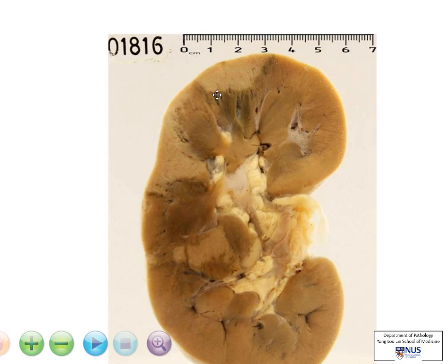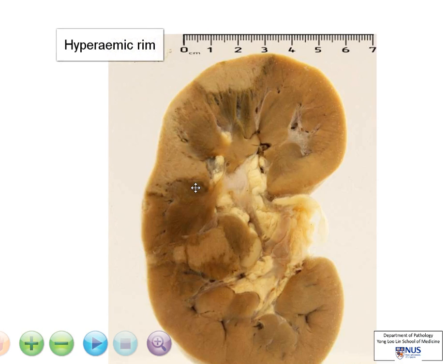Now at the edges of these pale areas, we can see some darker areas, almost like a darker rim around them, and these represent areas of hyperemia, or increased blood flow.